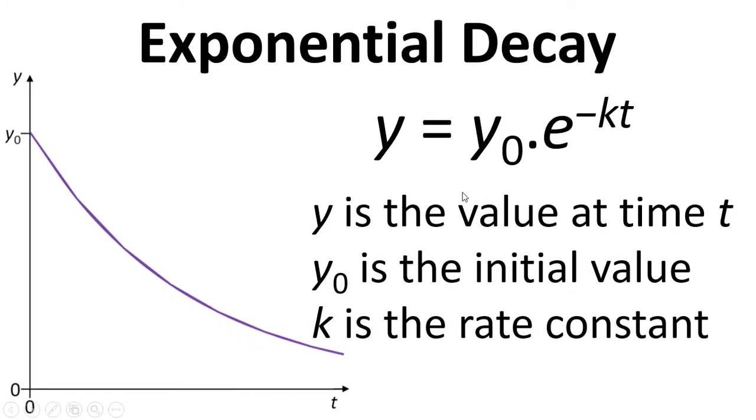We can also use it for exponential decay. The difference now is that we have a minus sign, and we get this classical decay curve where things are dropping away over time. Again, y is the value that changes over time, y naught is the initial value, and k is the rate constant.